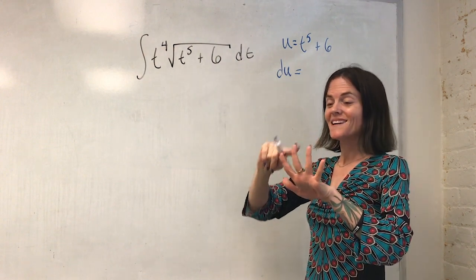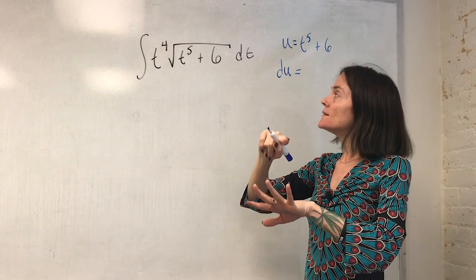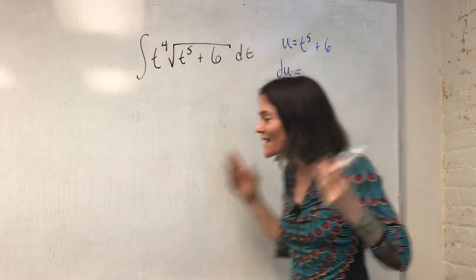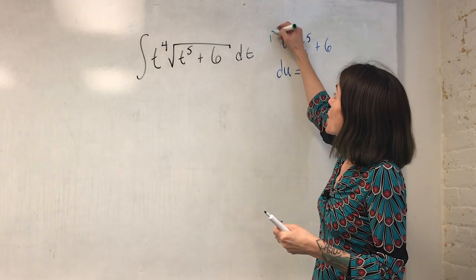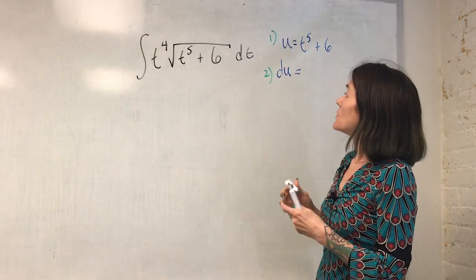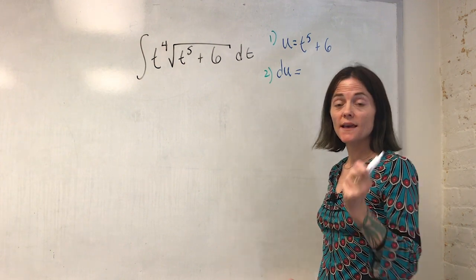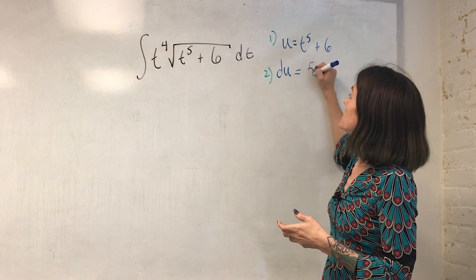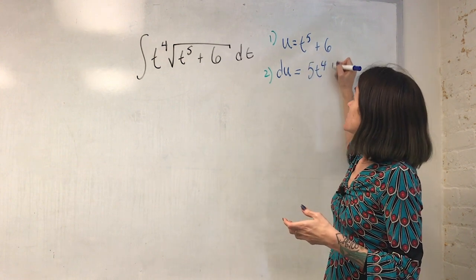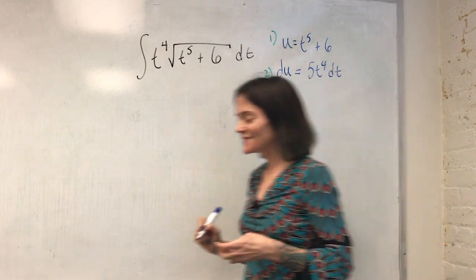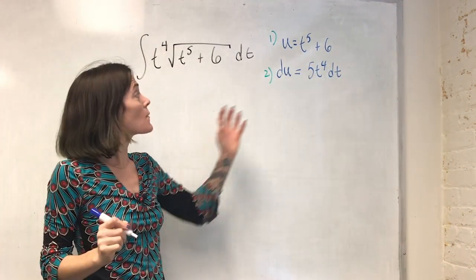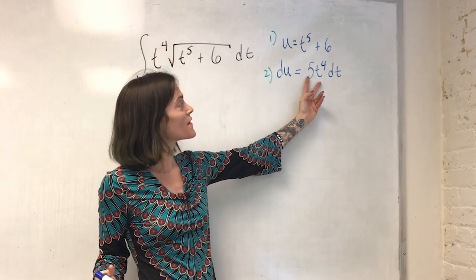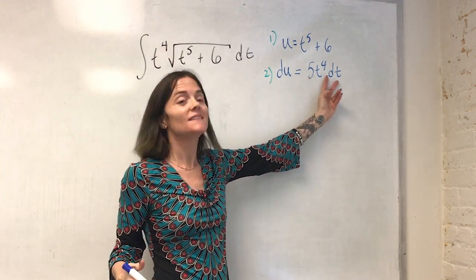u, du, convert to an integral of u, integrate, go back to t. Maybe I'll number them here for the first example. Number one, number two. What is du? It is always, you take the derivative, and then times dt. It's always du, you take the derivative of u with respect to t, or x, or whatever the original variable was, and then times dt.